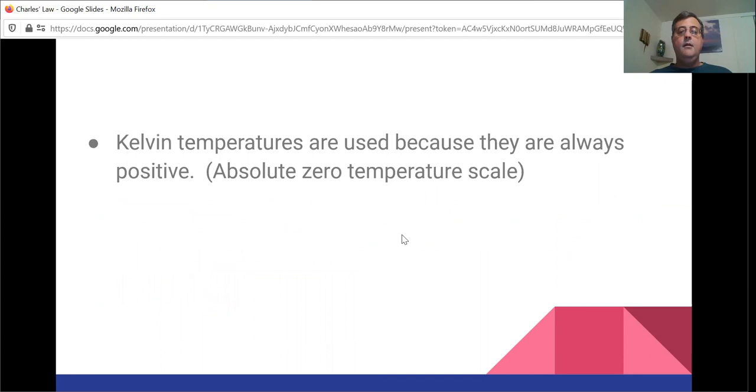Now the Kelvin temperatures are used because they're always positive. You cannot have a negative number in the denominator. Doing so would give you a negative volume, which means you're violating the laws of conservation of matter. And now God is angry at you. Always a bad thing. You can't have zero in the denominator because that gives you an undefined fraction. So for this to work, the denominator, the temperature, always has to be positive.